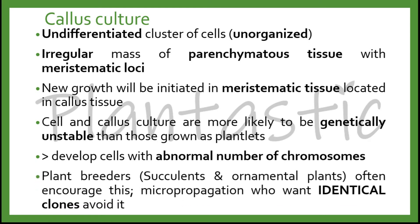However, plant breeders, especially succulents or other ornamental plant breeders, prefer callous culture because they want the variegations or the different traits shown by the colors or the size of the plants. On the other hand, micropropagation seeking identical clones will avoid callous culture.